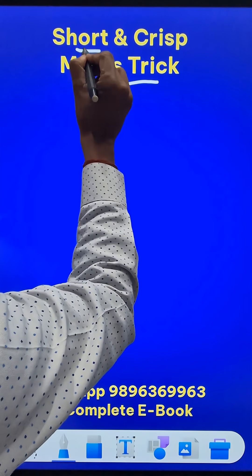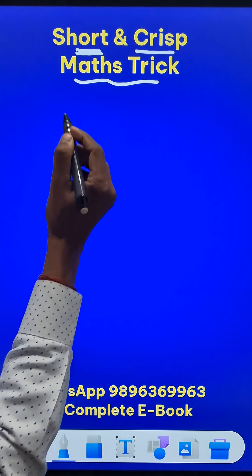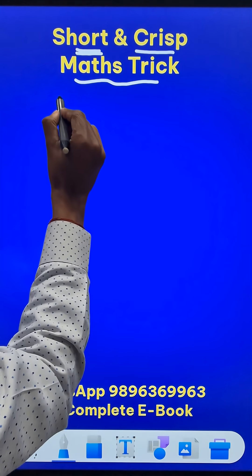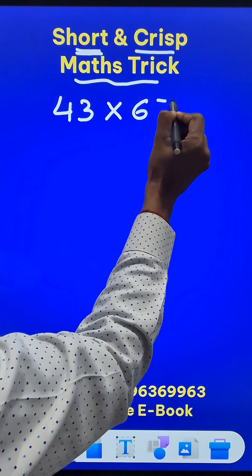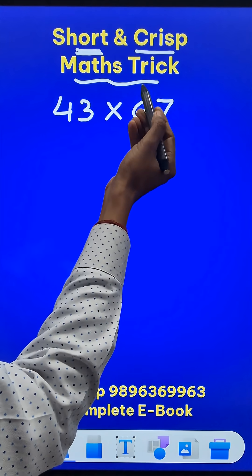This mathematics trick is very short and crisp. You will save a lot of time in the exams. Suppose you need to do 43 times 67, two-digit number by another two-digit number.